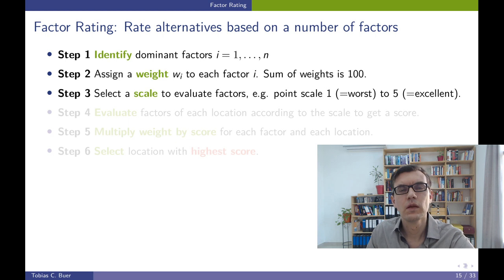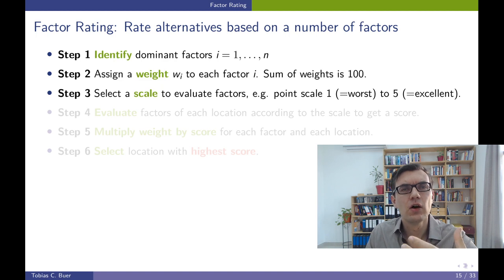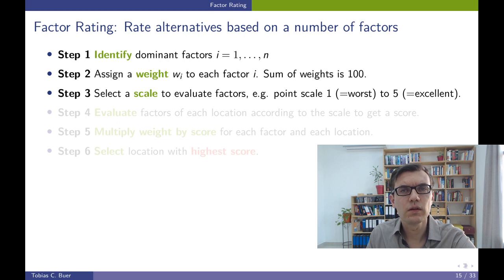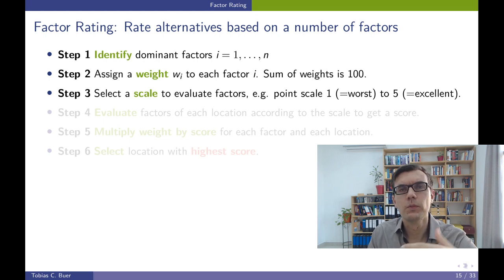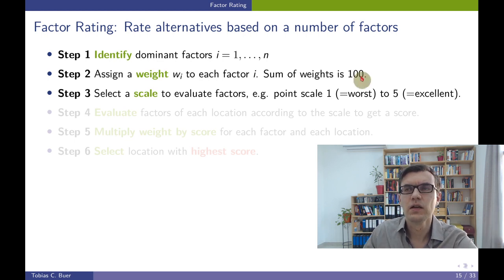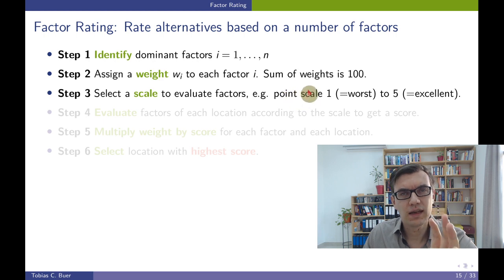In step number 3, we decide how we want to measure our factors. It is crucial that we measure all the factors in the same way — using the same dimension. A typical measure often used for practical cases, particularly when we have qualitative factors, is a point scale, a rating between 1 and 10 or 1 to 5. You know these from app store product ratings, where 5 is the highest rating and 1 is the lowest.